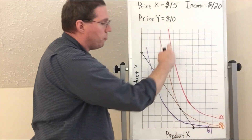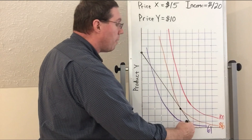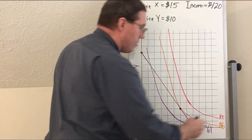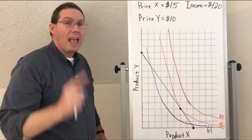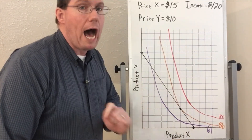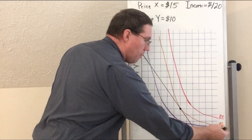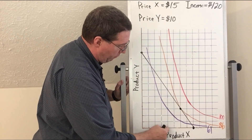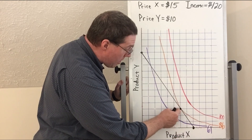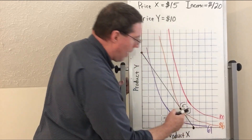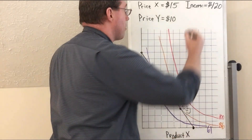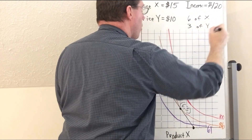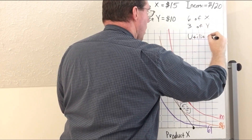Can this person achieve 100 utility? No — the budget line never even comes close to touching the red indifference curve. The most they can get is 86. So how much of X and how much of Y should they buy to get maximum utility of 86? It's whatever the coordinate is of that tangent point. Counting along the axes, the coordinate is 6 of X and 3 of Y. In order to maximize their utility, this person has to purchase 6 of X and 3 of Y for a utility of 86.